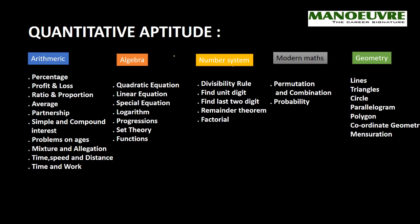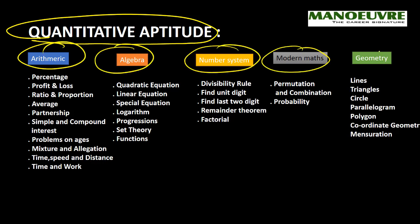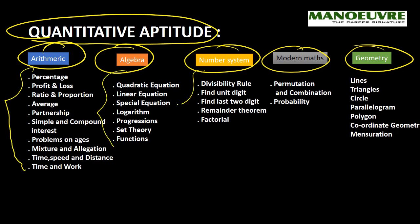Now let's see the syllabus for CAT in detail. For the Quantitative Aptitude section, there are five major topics: first is Arithmetic, second is Algebra, third is Number System, fourth is Modern Maths, and fifth is Geometry. Please pause the video and jot down all these topics and prepare for these topics only if you are writing the CAT exam.